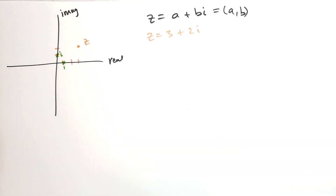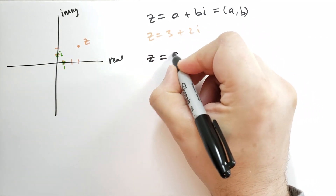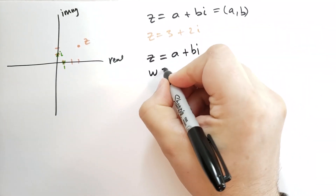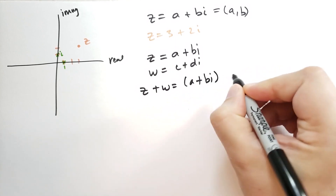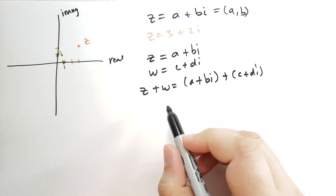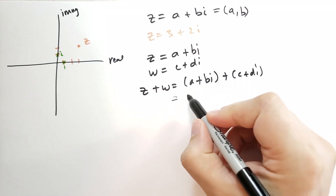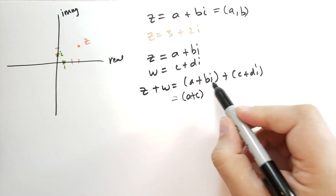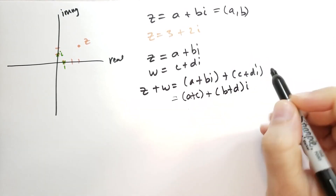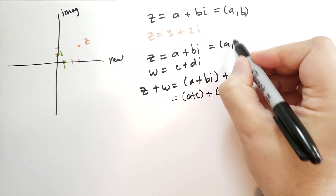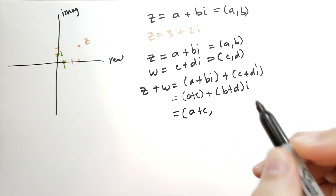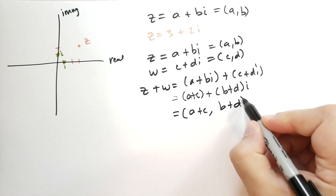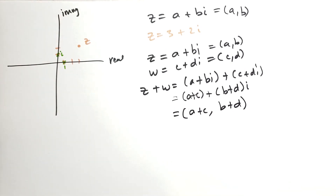If we have Z equals A plus Bi and W equals C plus Di and we want to add these two numbers together, we note that there are two real terms, so we get A plus C, and we have Bi and Di that we add together to get B plus D, quantity, times i. So the net effect is: adding complex numbers is the same as adding their real coordinates and adding their imaginary coordinates together — it works just the way you add points together.